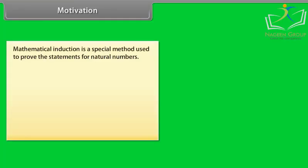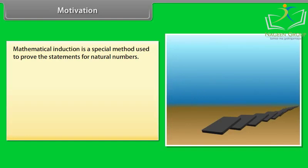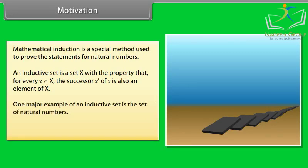Motivation. Mathematical induction is a special method used to prove the statements for natural numbers. In the featuring clip, we push the first domino, then the next one automatically falls and we see that all the dominoes fall. It shows the induction. An inductive set is a set X with the property that for every x belonging to X, the successor x' of x is also an element of X. One major example of an inductive set is the set of natural numbers, denoted by N.